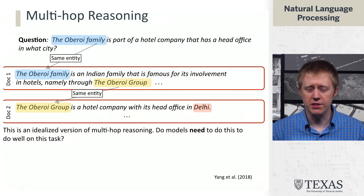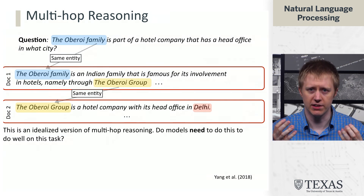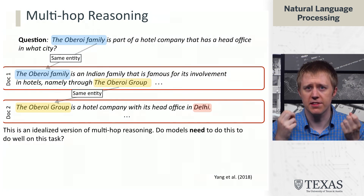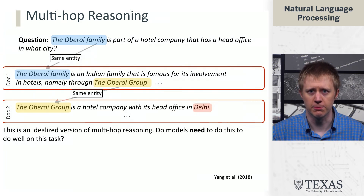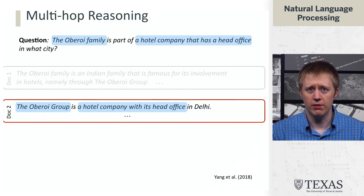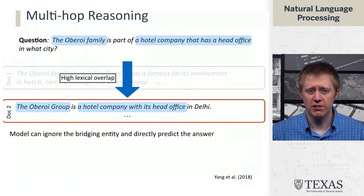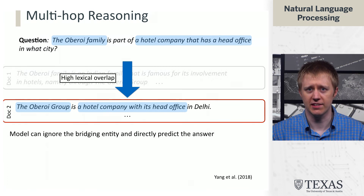This is a much more complex style of question, and it would be great if our models could actually do this task. But the question is: if we train a model on a dataset of these types of questions, is the model actually doing the kind of reasoning we're depicting? The answer is only somewhat. Looking at the Oberoi family example, you actually don't really need the intermediate link because there is such high lexical overlap between the question and the sentence containing the answer.